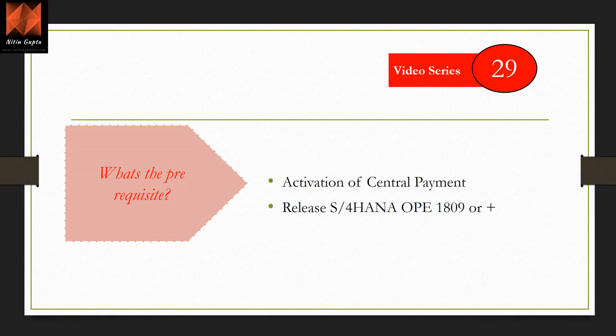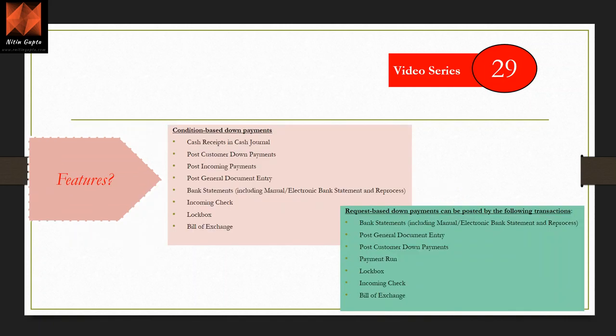Let's talk about the features for both types. In condition-based, supported transactions include cash received, customer down payment posting, incoming payment, general document entry, bank statement, incoming check, lockbox, and bills of exchange. In request-based, we have bank statement, general document posting, down payment, and some other items — there are slightly fewer supported options.